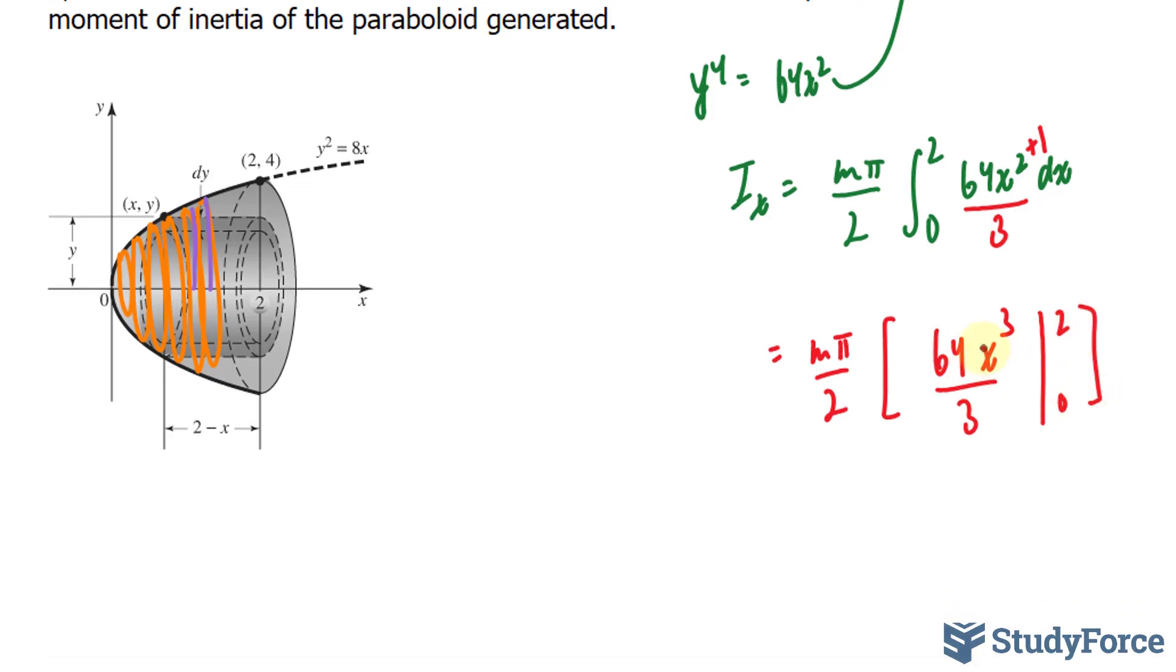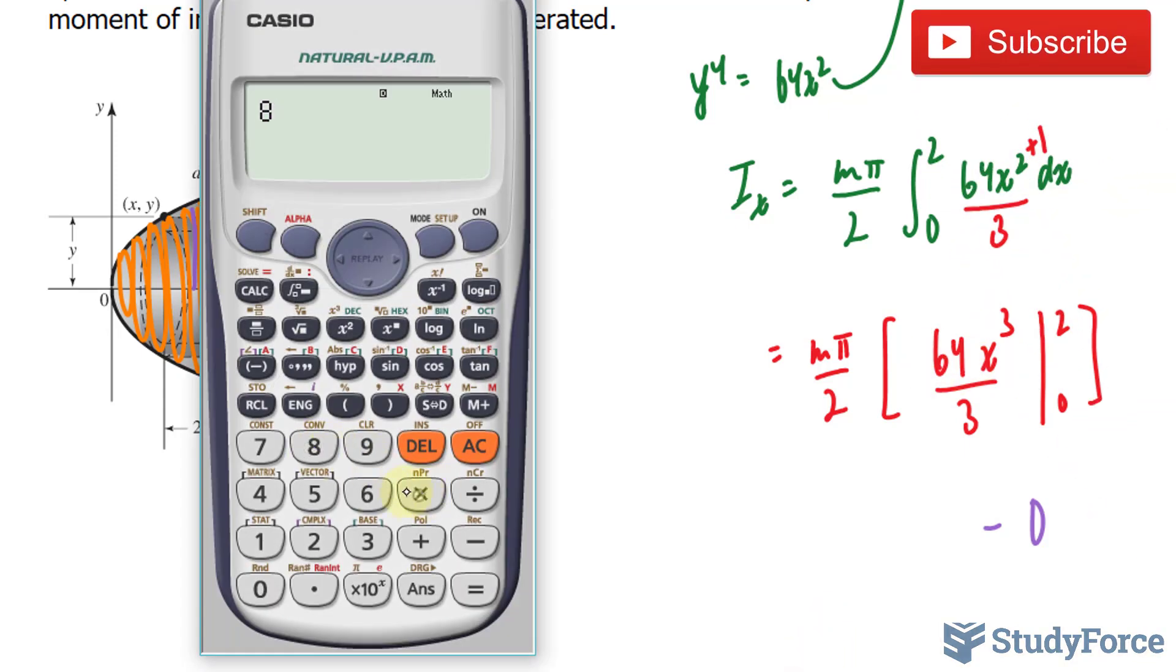When x is 0, well, that becomes 0. When x is 2, 2 to the power of 3 is 8 times 64 divided by 3. 8 times 64 divided by 3 gives us that, times pi divided by 2.